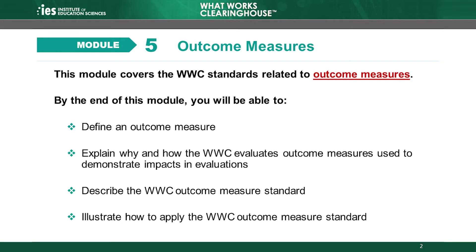According to WWC standards, the outcome measures a study uses must meet certain requirements. Outcome measures are used to assess the effect of an intervention, and it is important that outcome measures are appropriate, valid, and reliable. In this module, we will discuss the WWC standards related to outcome measures, covering the WWC definition of an outcome measure and explaining why and how the WWC evaluates the outcome measures used to demonstrate impacts in studies.